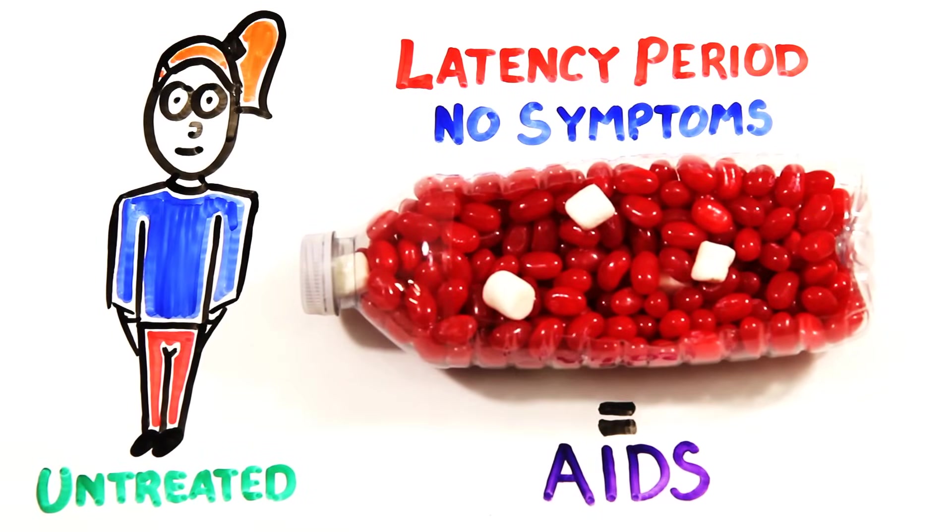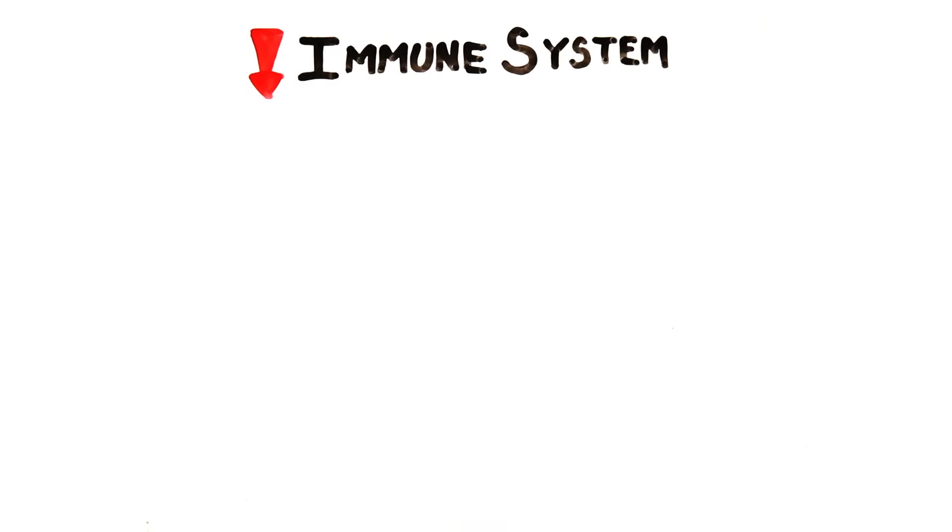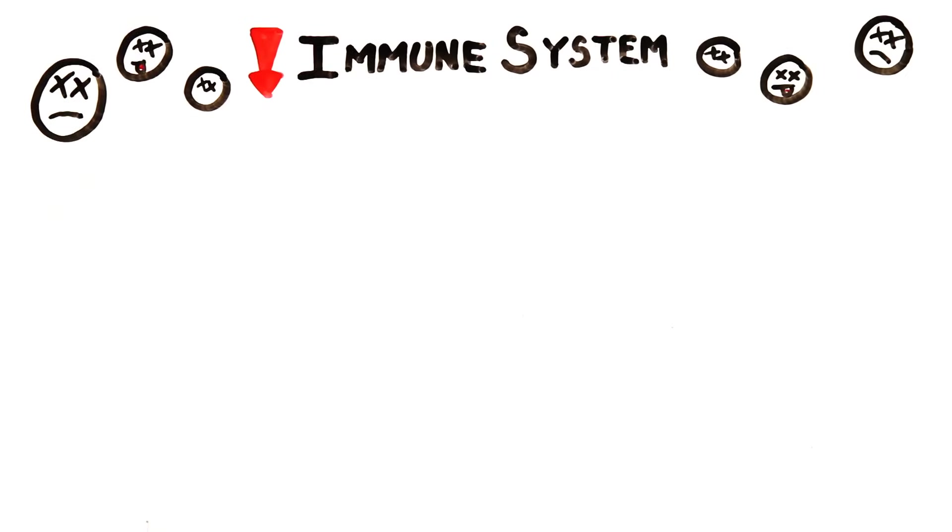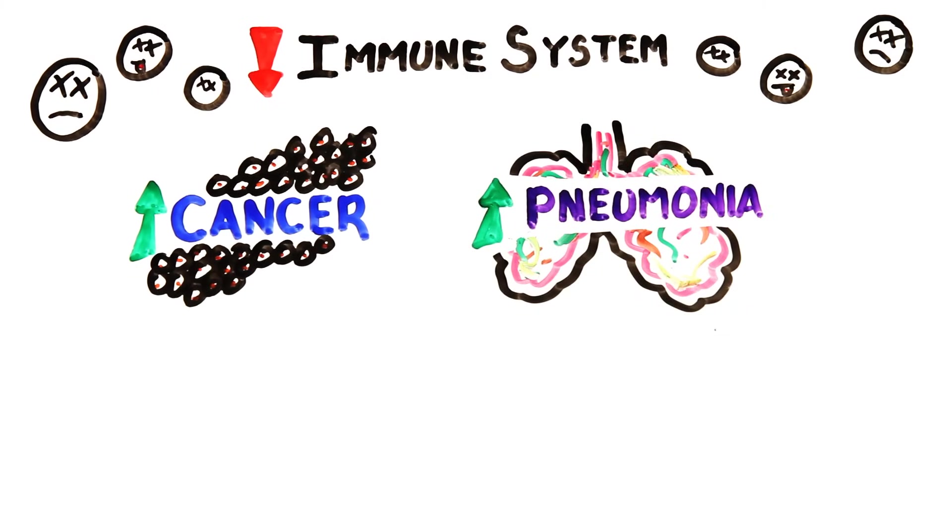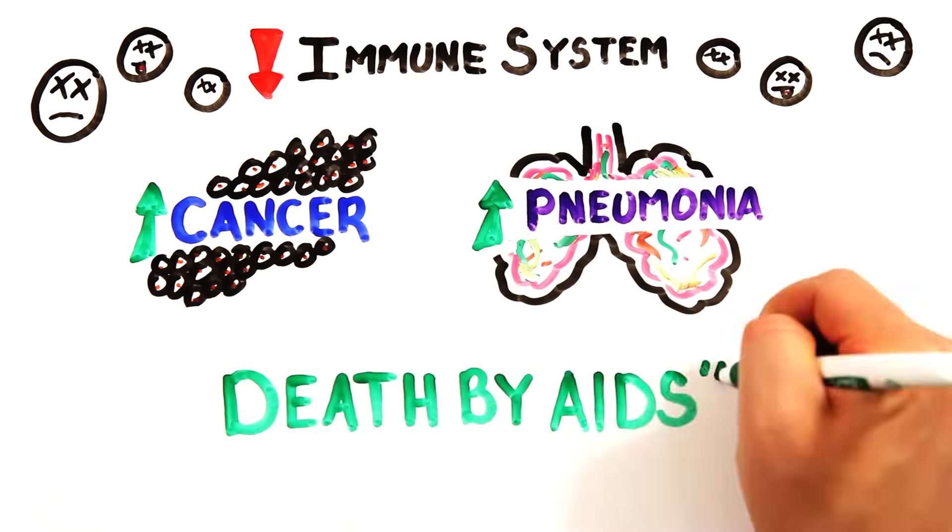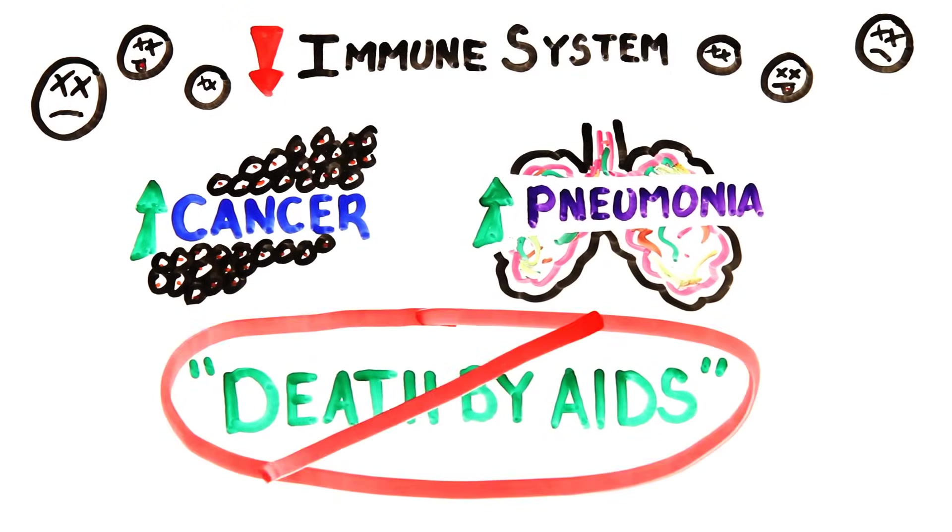After progressing this far, the immune system becomes suppressed and is much more susceptible to cancers and opportunistic infections such as pneumonia. A person doesn't die from AIDS, they actually die from an illness that the body could not fend off.